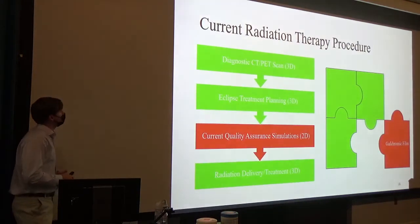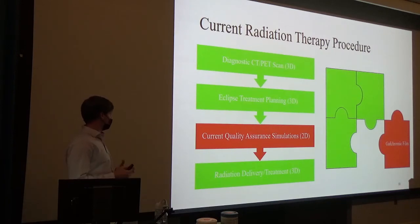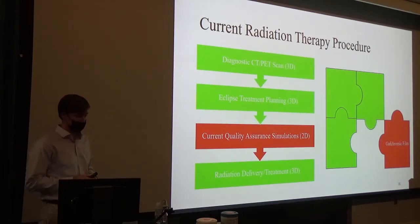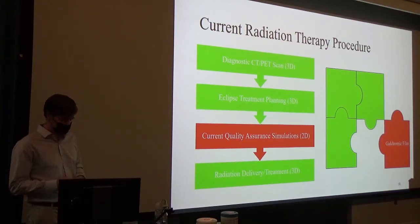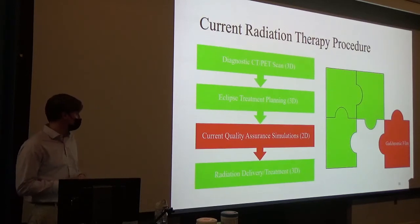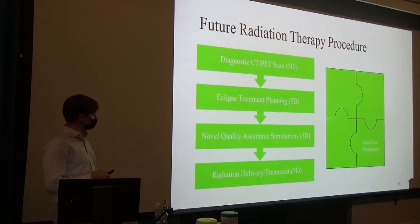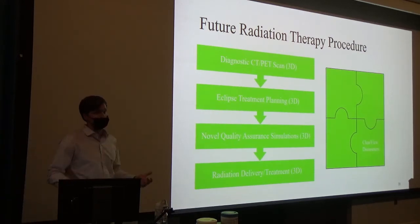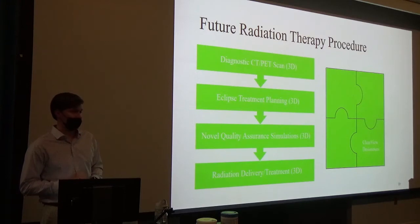In conclusion, the current radiation therapy procedure uses a quality assurance simulation done in two dimensions using gafchromic and radiochromic films. This can lead to inaccuracies in the treatment planning process and delivery. We found a potential piece that fits the puzzle — a three-dimensional solution in the Clearview 3D radiochromic dosimeter. This can lead to improved patient outcomes as well as increased confidence that we're delivering the radiation that the treatment plan is predicting.